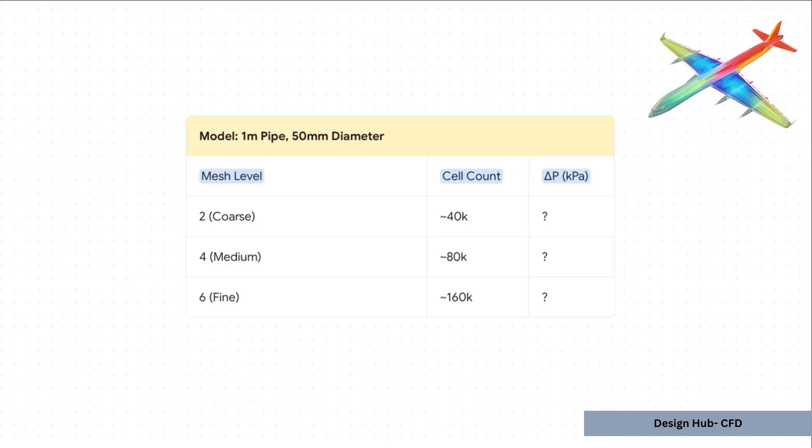And to help you get started right away, here's your first exercise. It's super simple. Take a one meter long pipe. Run it with three different global mesh levels: a coarse level 2, a medium level 4, and a fine level 6. For each run, just write down the cell count and the pressure drop. When you plot that data, you will build your very first mesh independence curve and see this entire theory come to life.